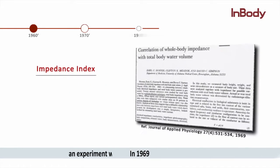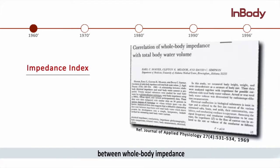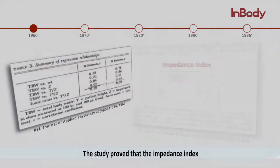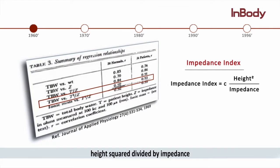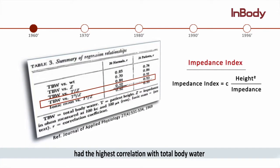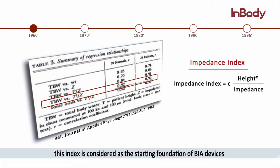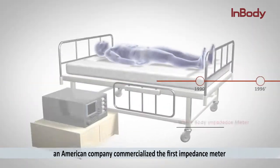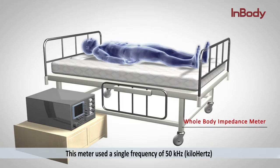In 1969, an experiment was carried out to find the correlation between whole-body impedance and volume of total body water. This study proved that the impedance index — height squared divided by impedance — had the highest correlation with total body water, and is considered the starting foundation of BIA devices. Ten years later, an American company commercialized the first impedance meter, which used a single frequency of 50 kilohertz.